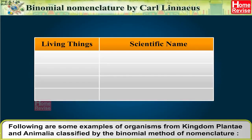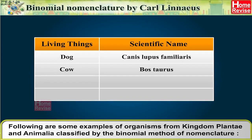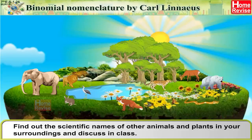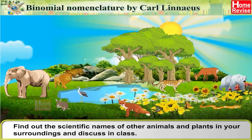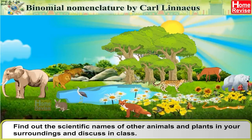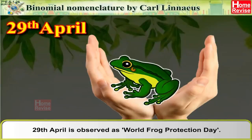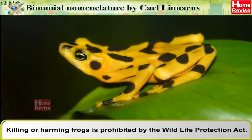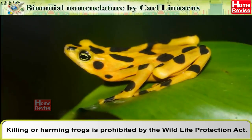Following are some examples of organisms from Kingdom Plantae and Animalia classified by the binomial method of nomenclature. Find out the scientific names of other animals and plants in your surroundings and discuss in class. The 29th April is observed as World Frog Protection Day. Killing or harming frogs is prohibited by the Wildlife Protection Act.